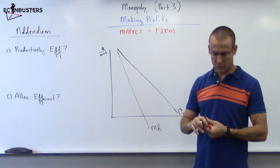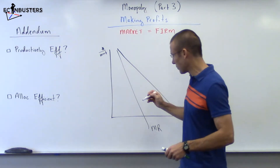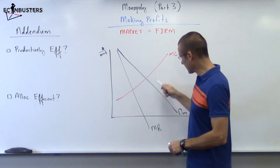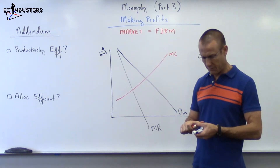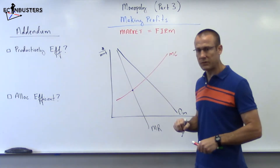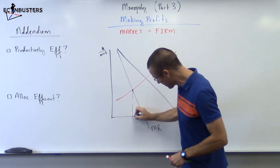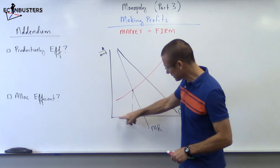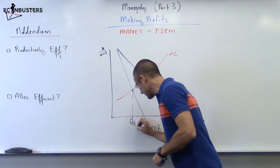Now I'm going to add in the marginal cost curve. Once again, just focusing on the upward sloping portion of the marginal cost curve. So I put that in, and once I get the big three curves on there — MR, demand, and MC — I can find the output level. Because I know where MR and MC intersect. We're going to produce all of these goods right up to this amount. Why are we producing all those? MR exceeds MC for all those goods. That's our Q profit max.